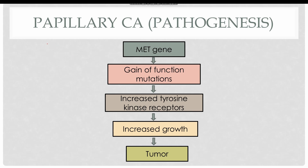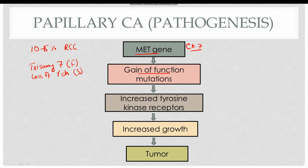The second most common variation is papillary cell carcinoma, accounting for almost 10 to 15 percent of cases. It is most frequently seen with trisomy 7 in familial cases and loss of Y chromosome in sporadic cases. The main gene in familial cases is the MET gene on chromosome 7; in trisomy 7 there are multiple copies of MET gene causing gain-of-function mutation, increasing tyrosine kinase receptors for hepatocyte growth factor. Papillary carcinoma also has TP53 and RB gene mutations.